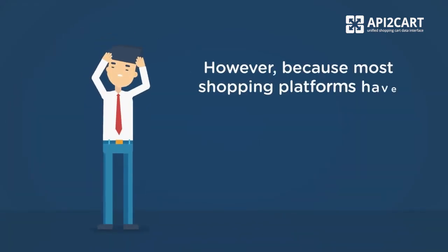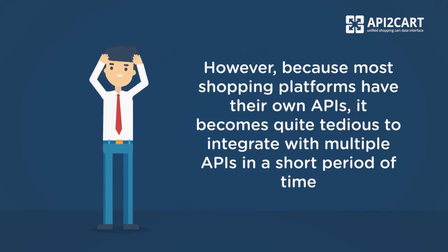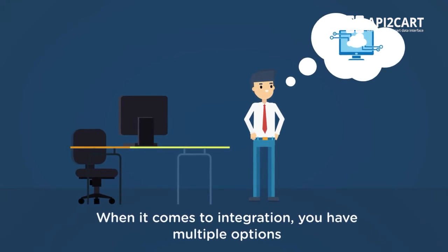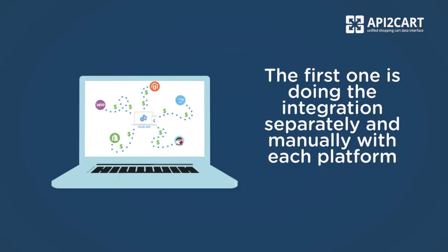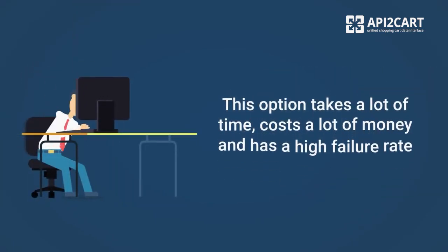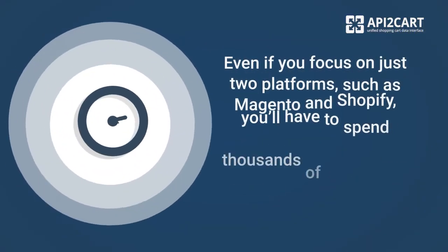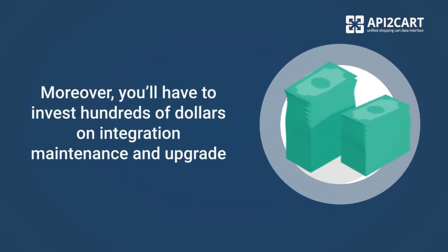However, because most shopping platforms have their own APIs, it becomes quite tedious to integrate with multiple APIs in a short period of time. When it comes to integration, you have multiple options. The first one is doing the integration separately and manually with each platform. This option takes a lot of time, costs a lot of money, and has a high failure rate. Even if you focus on just two platforms, such as Magento and Shopify, you'll have to spend thousands of dollars and months until you get the integration developed. Moreover, you'll have to invest hundreds of dollars on integration maintenance and upgrades.